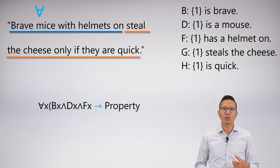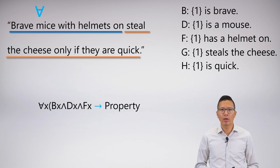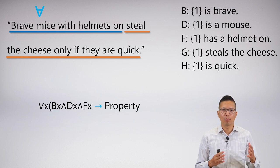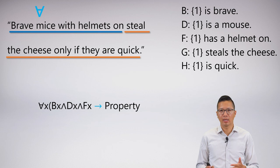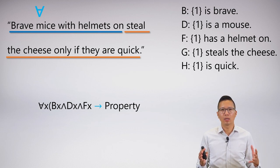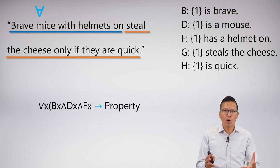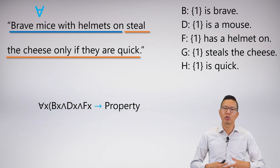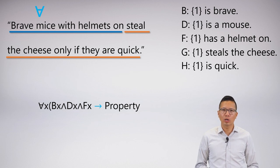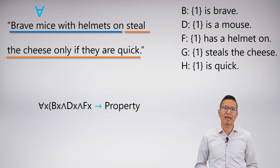I get: for all X, (BX ∧ DX ∧ FX) →. So I'm saying that the group — the subject — has to have all these properties, which is why I use a conjunction for everything in the antecedent of my symbolization.